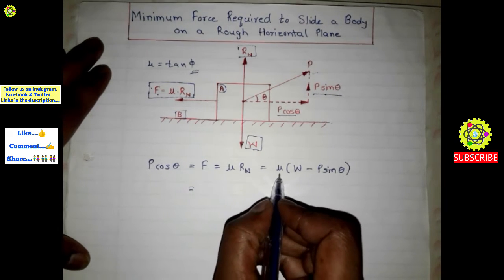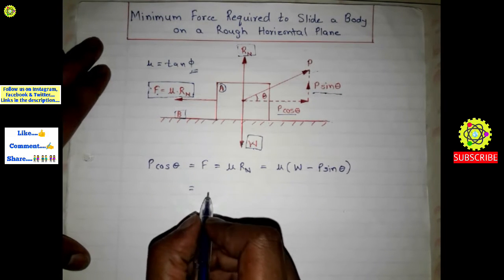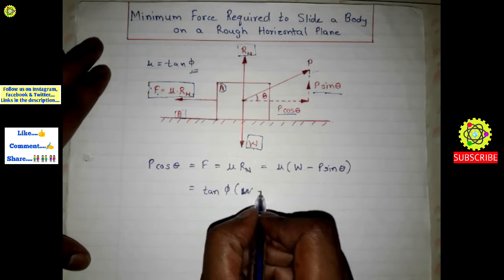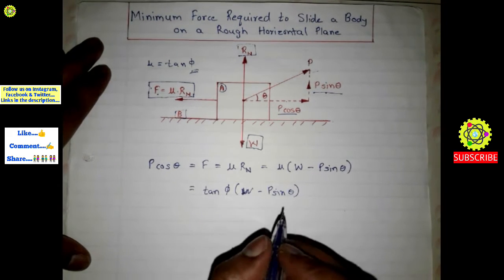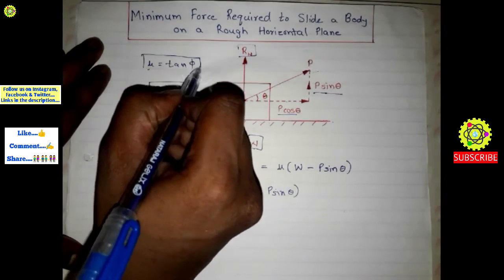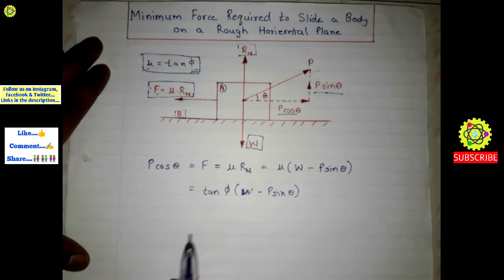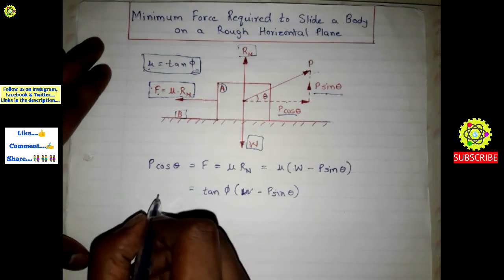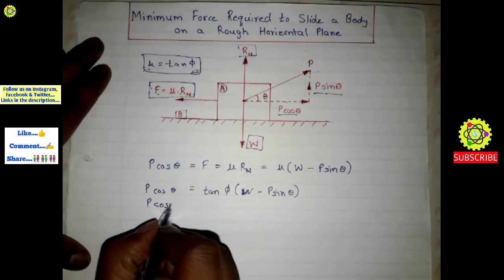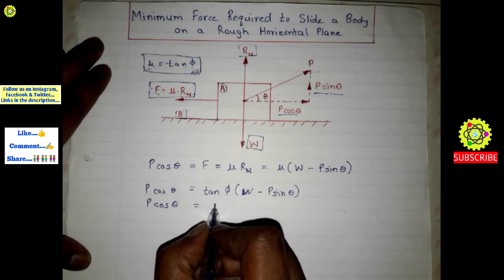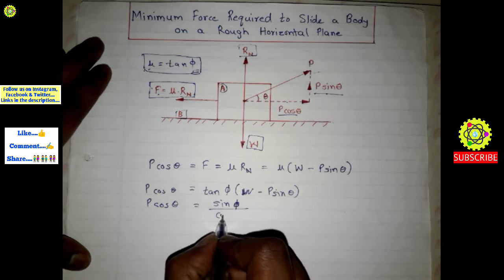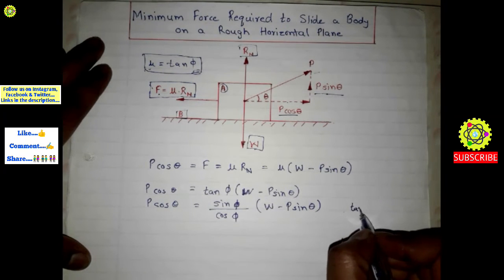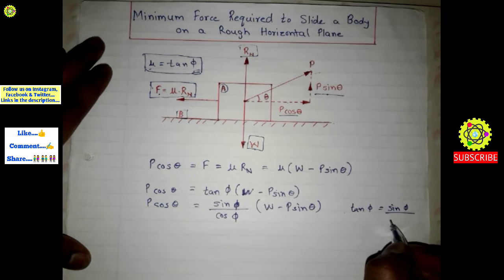Since μ is equal to tan φ, substituting into the horizontal equilibrium equation gives: P cos θ is equal to tan φ into bracket (W minus P sin θ). Since tan φ equals sin φ upon cos φ, this is the trigonometric function.